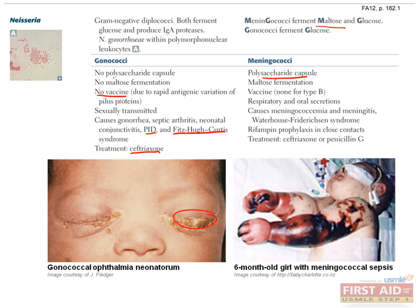Neisseria meningitidis can also cause meningococcemia, a life-threatening meningococcal sepsis, during which small vessel thrombosis and consumptive coagulopathy results in severe multi-organ disease. Petechial or purpuric rashes are often seen on the trunk and lower extremities. Fulminant meningococcemia can result in septic shock and bilateral hemorrhagic adrenal gland destruction, known as Waterhouse-Friderichsen syndrome. Destruction of adrenal glands leads to hypotension, hypocortisolism, hyponatremia, and hyperkalemia.